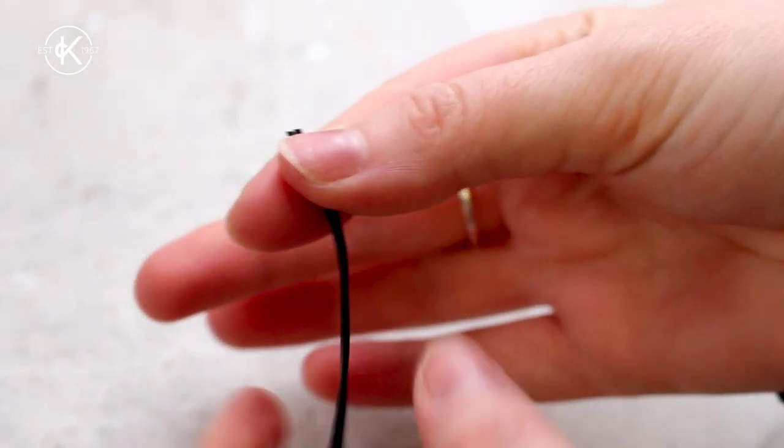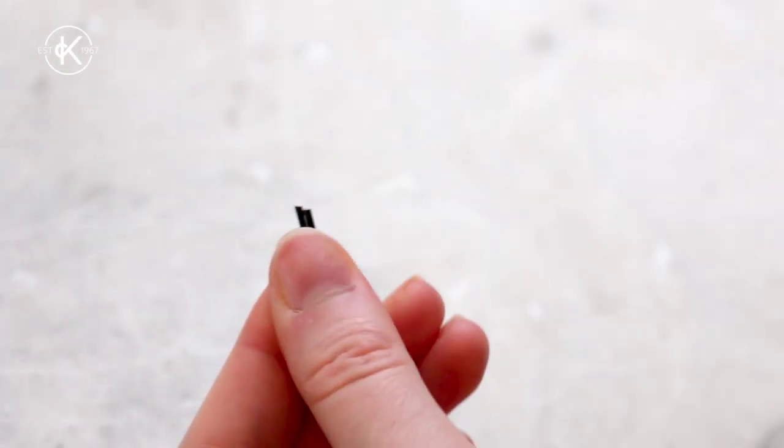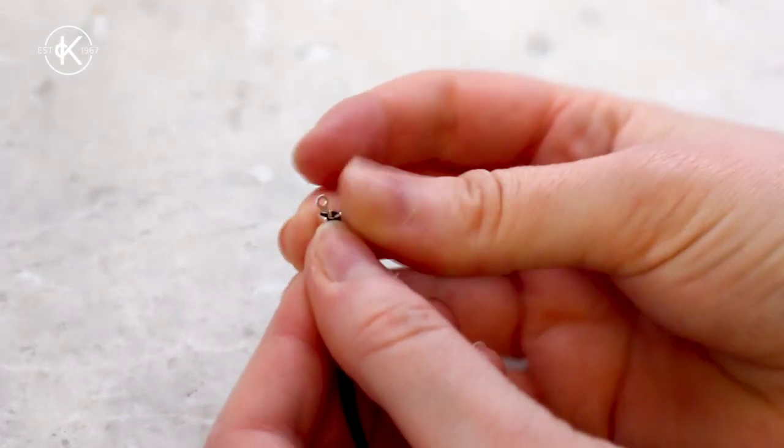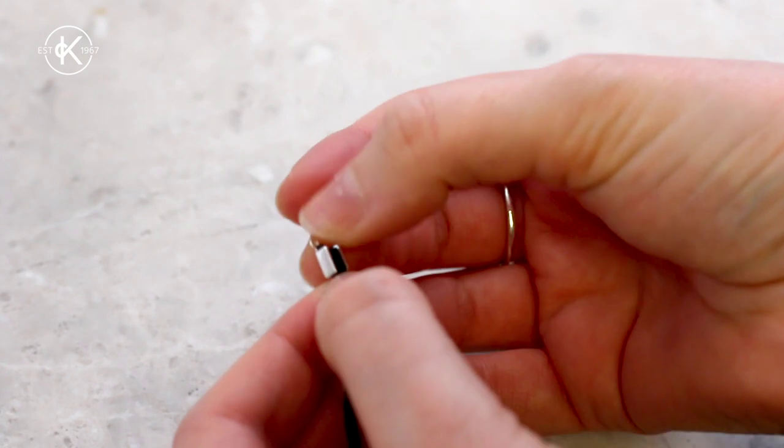So let's get into finishing this bracelet. You want to make sure that you've cut your thread to your required length, then get one of the cord ends and place it over the end of the thread.